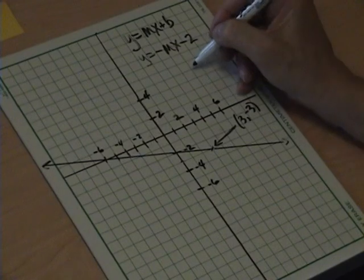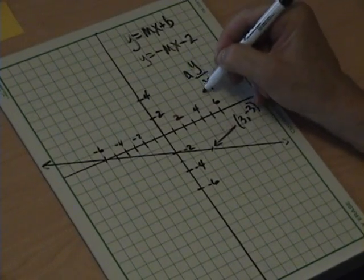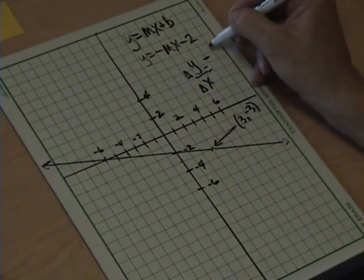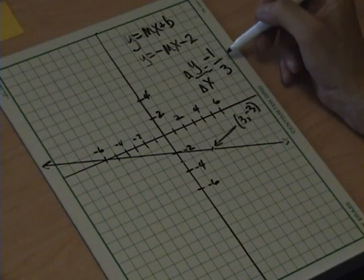So, our slope is the change in y over the change in x, and that was equal to down one and over three. So, our slope is a negative one over three.